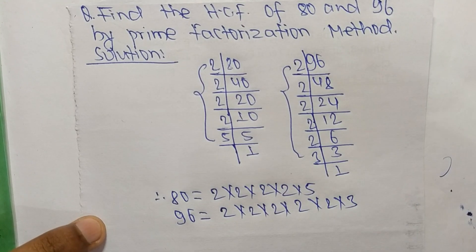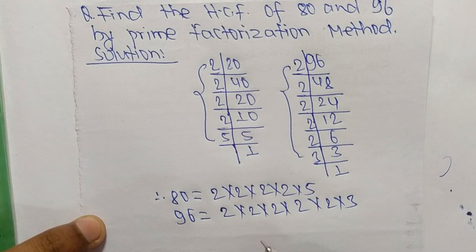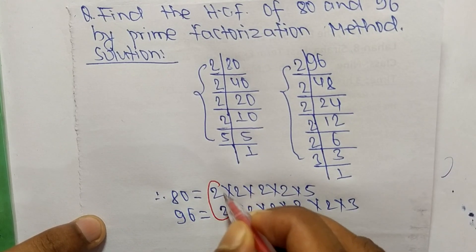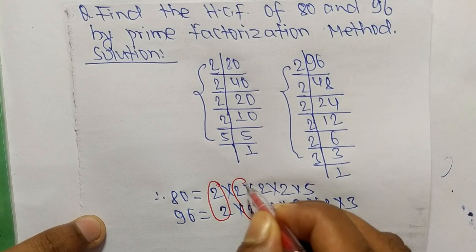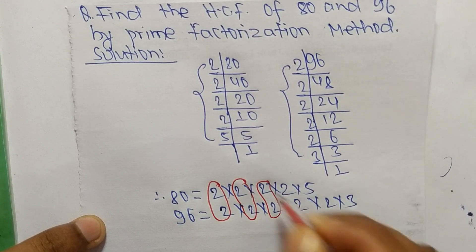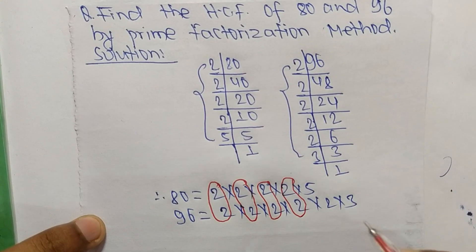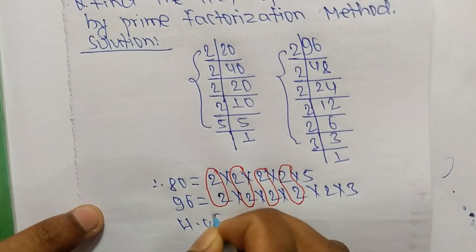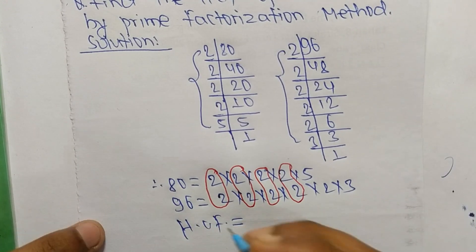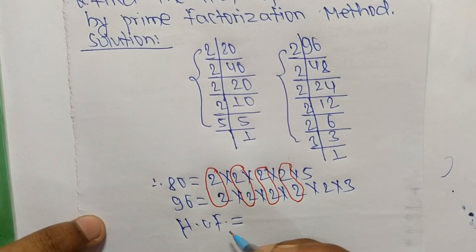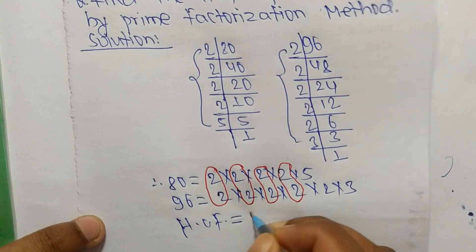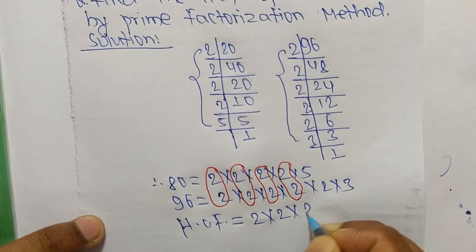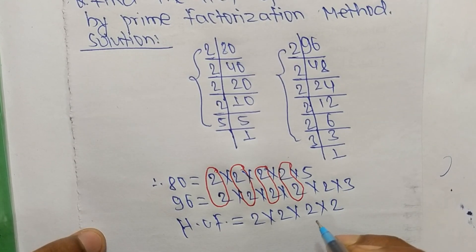Now we select the common factors from these prime factorizations. The common factors are the first 2, second 2, third 2, and fourth 2. The HCF is equal to the product of these common factors, which is 2 times 2 times 2 times 2.